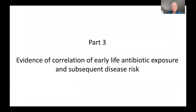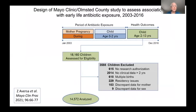Part three: evidence of correlation of early life antibiotic exposure and subsequent disease risk. Many studies have looked at cohorts of children and relationships with antibiotic use. I'm going to show a study I was involved with at the Mayo Clinic. This was a study of all the children born in Olmsted County, Minnesota, to assess the association of early life antibiotic exposure with disease outcome — particularly in the first two years of life. In total, 18,000 children were born during the study period; we studied about 14,000.